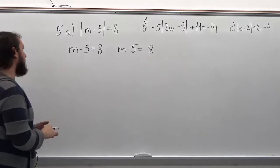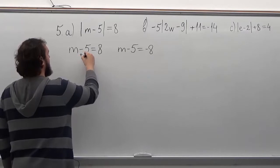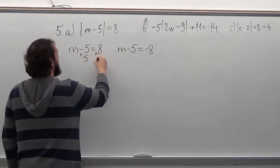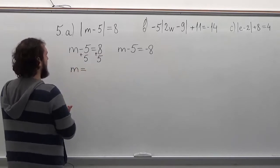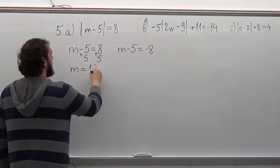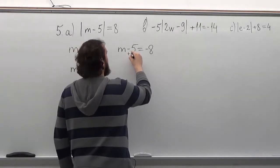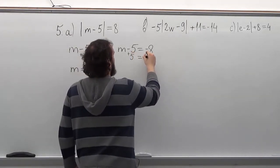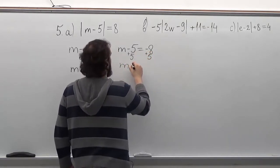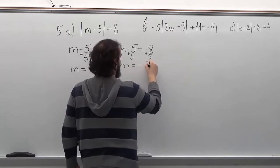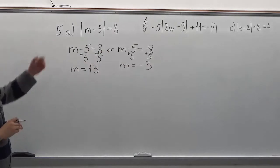Now, to solve this, we will add a positive 5 to both sides. We get an answer which is 13. And for this one, we'll do the same. The answer is minus 3. So both of those values are a correct answer to this problem.